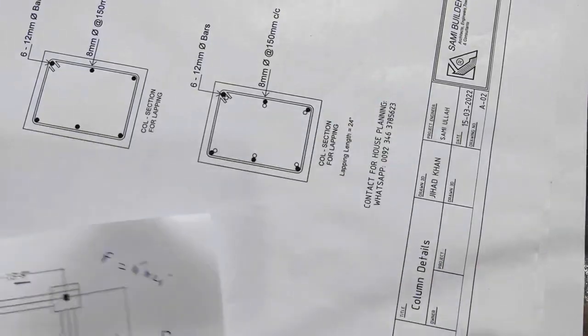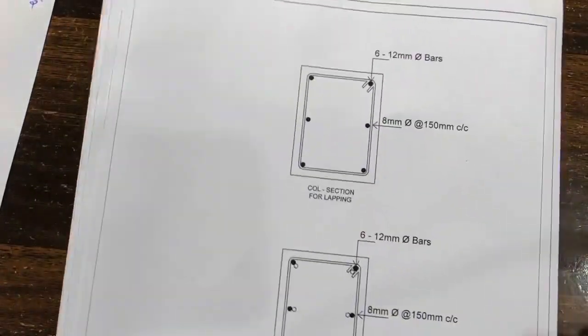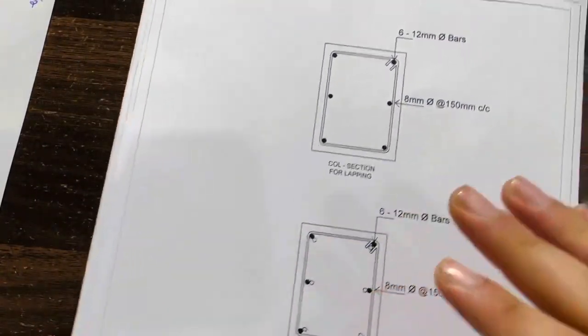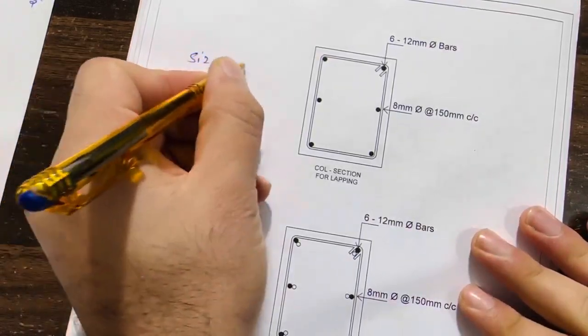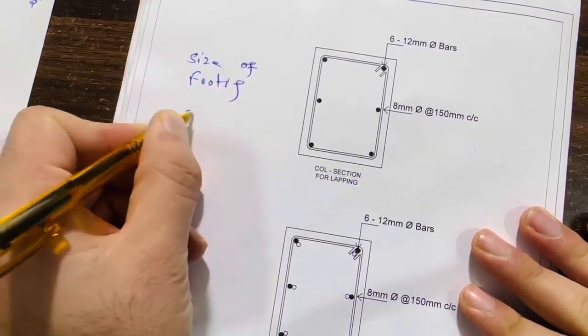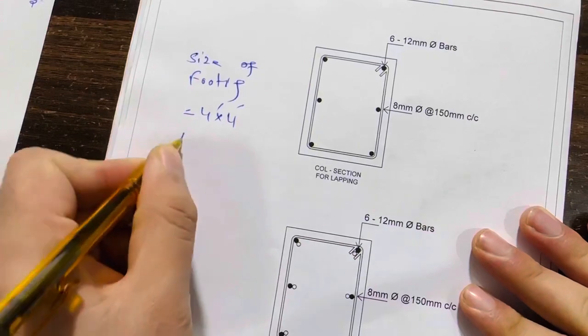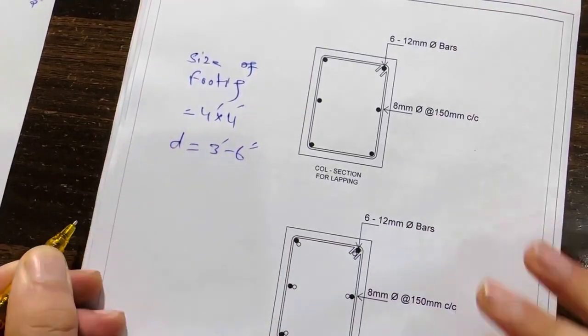You can use it normally for G+2 story. Let me guide you for the size of footing and also the strip size. The size of footing is 4 feet by 4 feet, and the depth is 3 feet 6 inches.